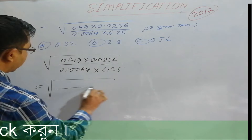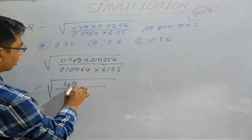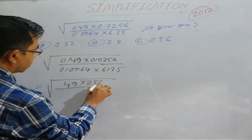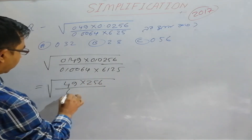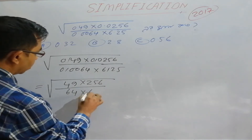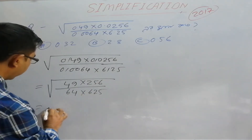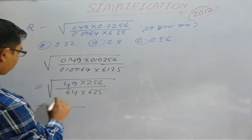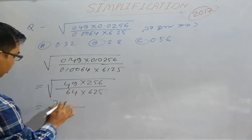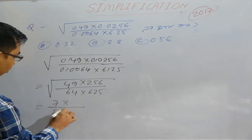This simplifies to 49 × 256 divided by 64 × 625. Now, 49 has a square root of 7, and 64 has a square root of 8.